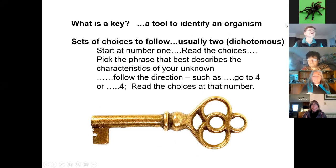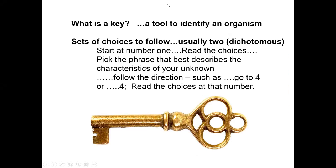On that first page — I actually did this 10 years ago, so some of those older books were still in use. So again, what is a key? It's a tool to identify an organism. There are sets of choices to follow, usually two — that means two cuts or two choices. Dichotomous is the word. You always have to start at number one. In a flow chart you always start at the top, read the choices, and pick the phrase or choice that best describes the characteristics of your unknown organism. You then follow what it says to do, such as 'go to four.'